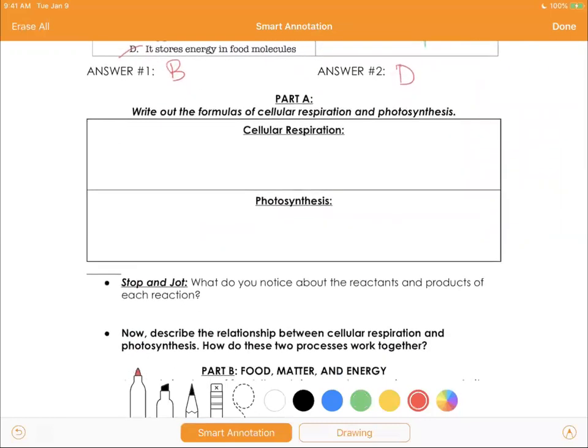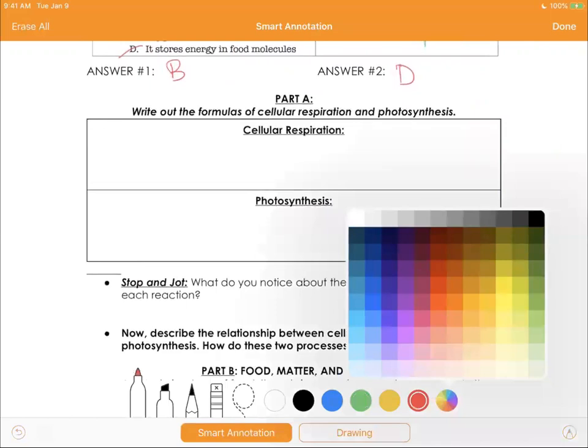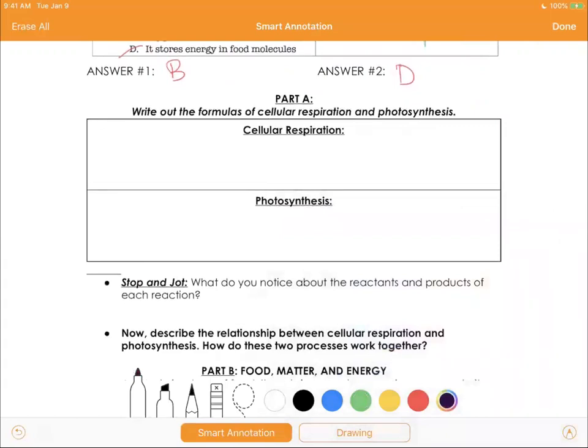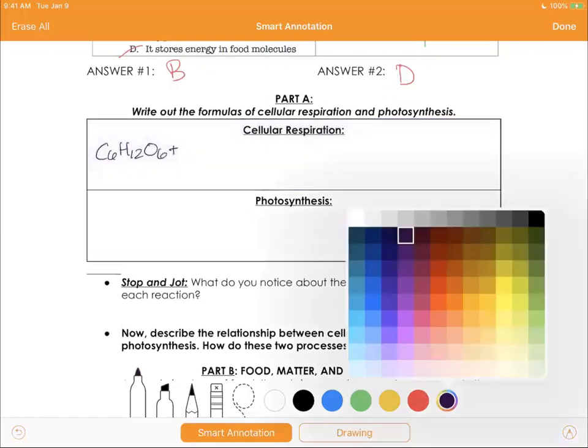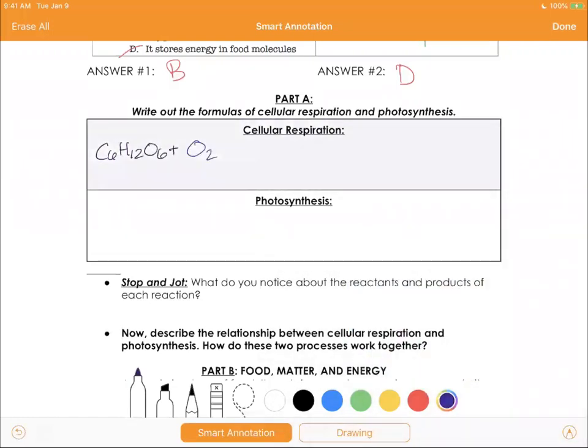Part A: Write out the formulas of cellular respiration and photosynthesis. So let's see, you remember properly, cellular respiration has two reactants: C6H12O6 plus O2. And that altogether yields what's being released, which is CO2 plus H2O plus what we love, ATP. This is what our cells need. So there's two reactants here.